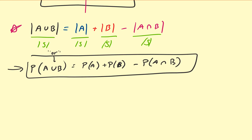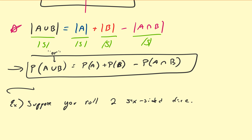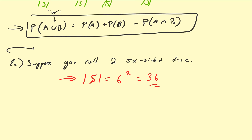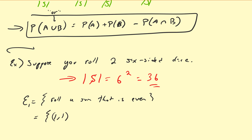So let us do an example. Suppose you roll two six-sided dice. If I roll two six-sided dice, then I already know my sample space — the size of my sample space is going to be equal to six-squared, or simply 36. Let us assume that I'm interested in the event such that I roll a sum that is even. Let's call this E1. So E1: 1 plus 1 is even, 1 plus 3 is even, and 1 plus 5 is even as well.